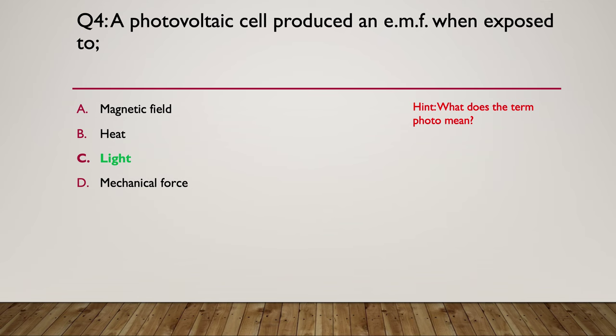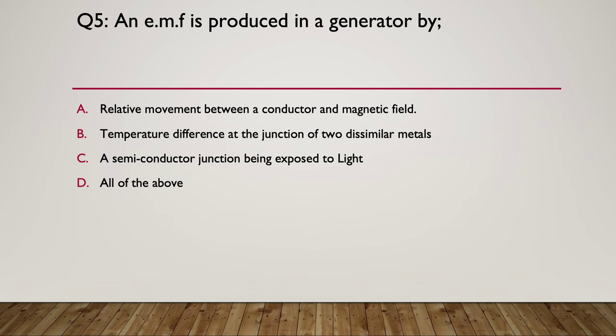Question five: an EMF is produced in a generator by — A) relative movement between a conductor and a magnetic field, B) a temperature difference at the junction of two dissimilar metals, C) a semiconductor junction being exposed to light, or D) all of the above — A, B, and C. Pause here while you think about it.